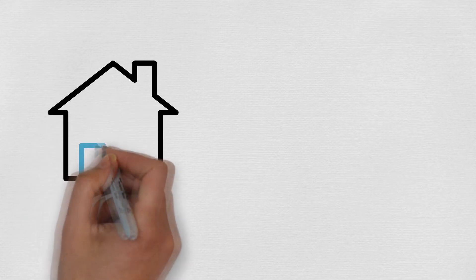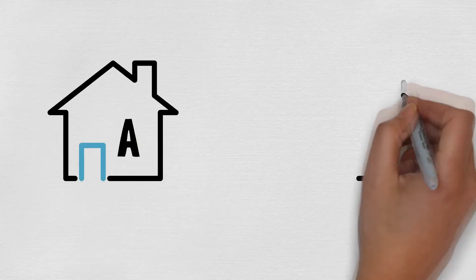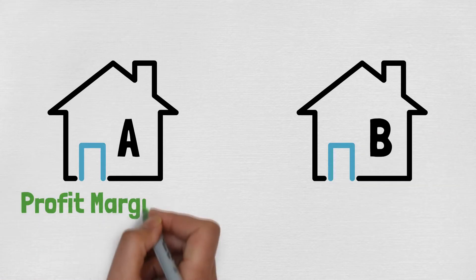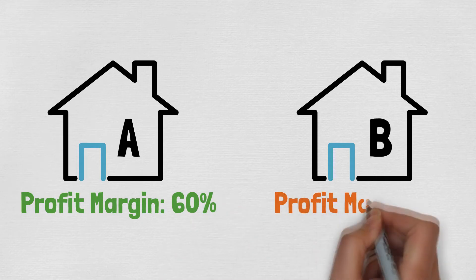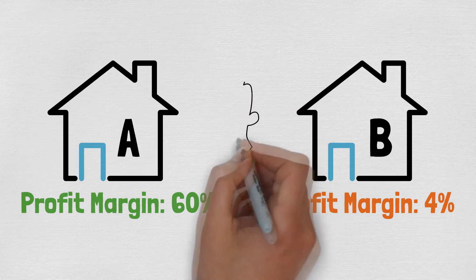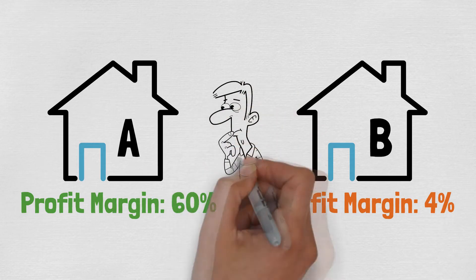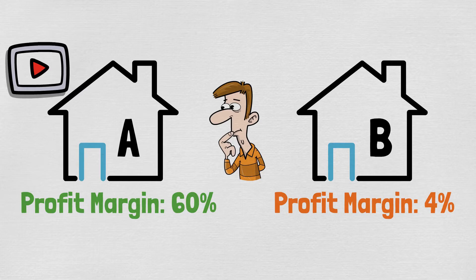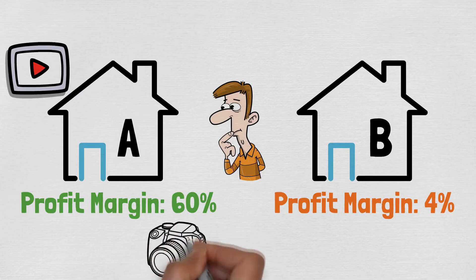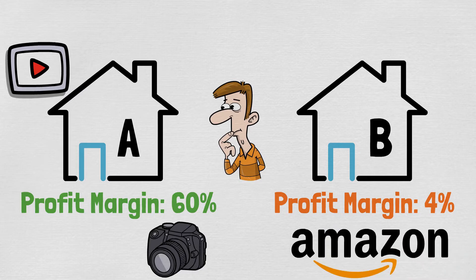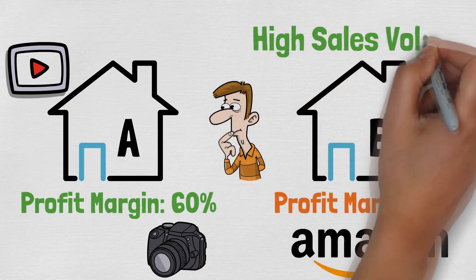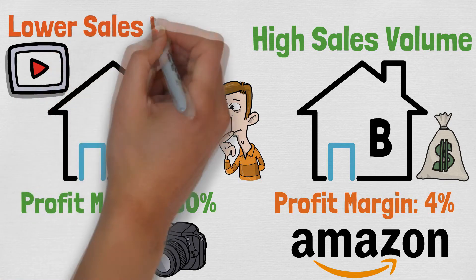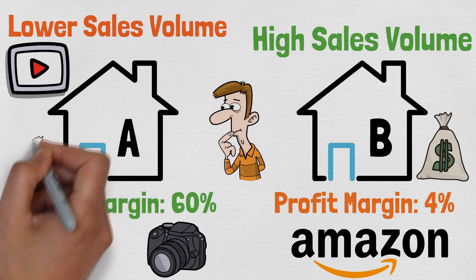You can use the profit margin to compare different companies, but as always, the profit margin shouldn't be the only ratio that decides your investments. For example, Company A has a net profit margin of 60% and Company B has a net profit margin of 4%. It seems like Company A is a lot better investment — but Company A is a company owned by a Finnish YouTuber, whose expenses are pretty much some camera equipment and an editor's salary. Company B is Amazon. Companies like Amazon don't have a huge profit margin, but they sell so much that it ends up with very high overall profits despite the low margin. Companies with high profit margins can have much lower sales volume but still make a profit thanks to that high margin.